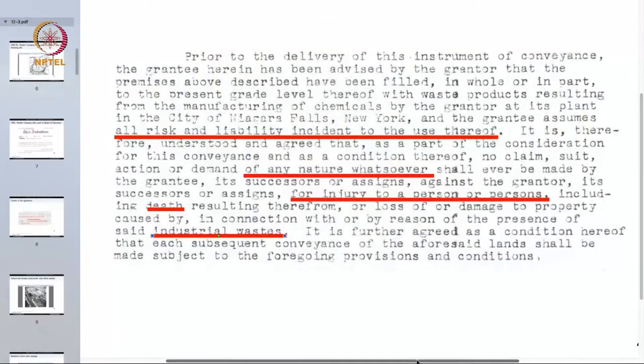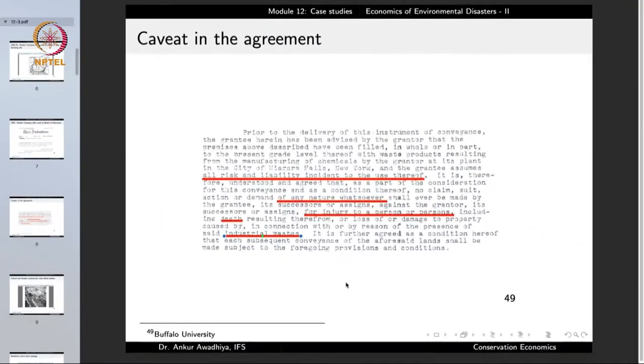The responsible course of action would have been to treat those chemicals. Hooker dumped the chemicals but never treated them. When giving this land to the Board of Education — at least the Board should have been more careful, especially since the warning was written right on the agreement. Many people just do not read agreements when signing them. When we are talking about industrial waste that can lead to death, this is not something that should be taken lightly.